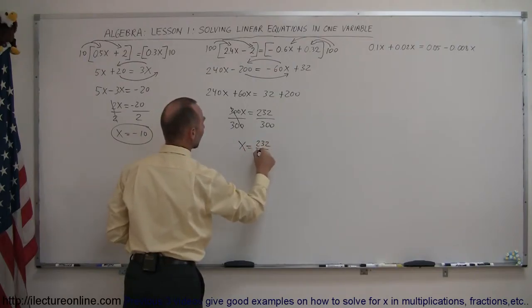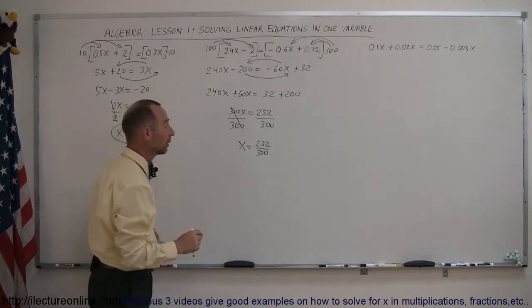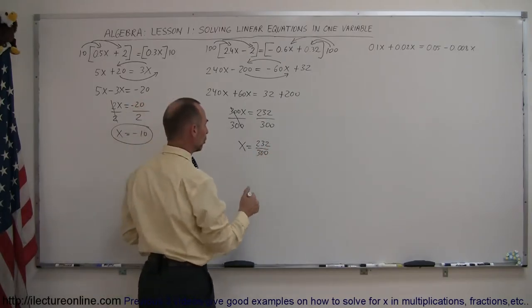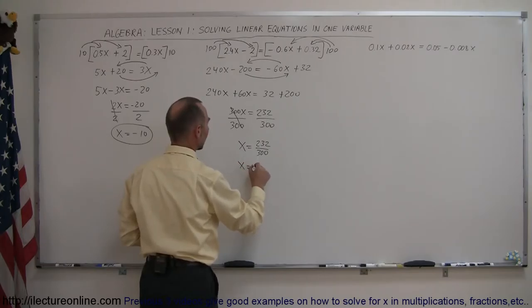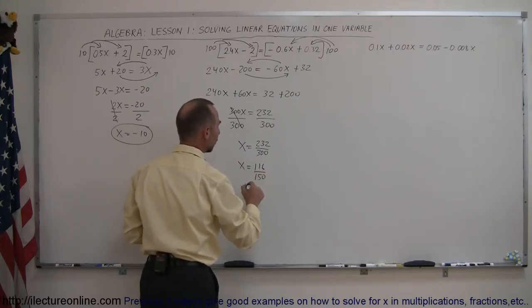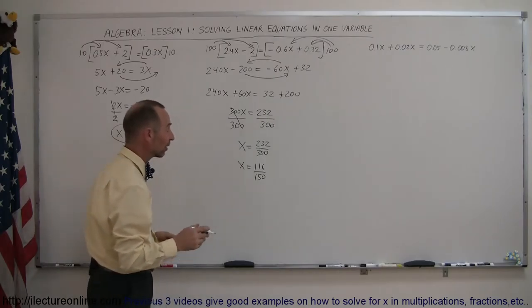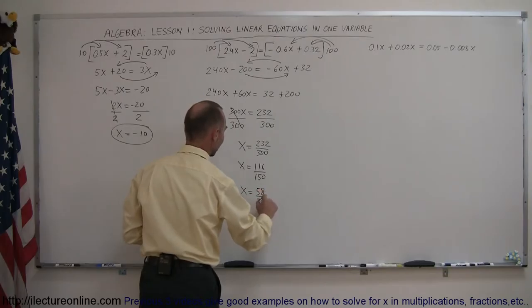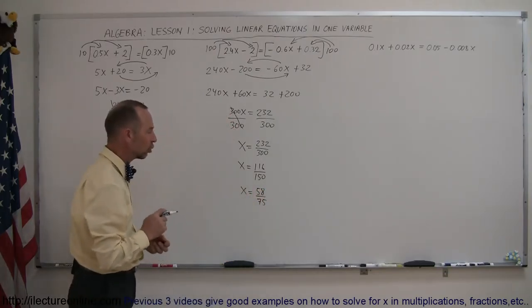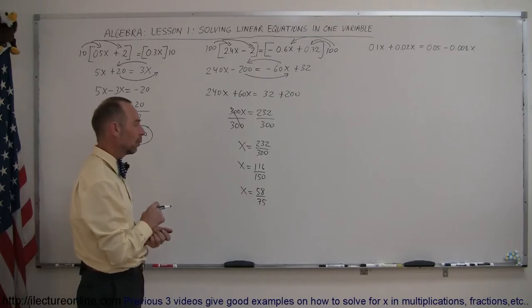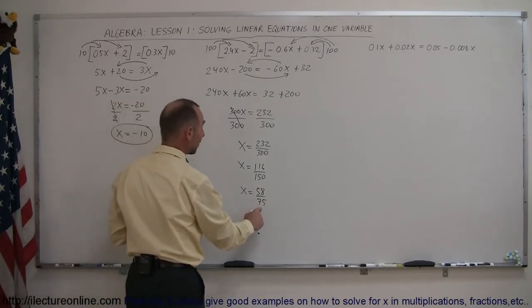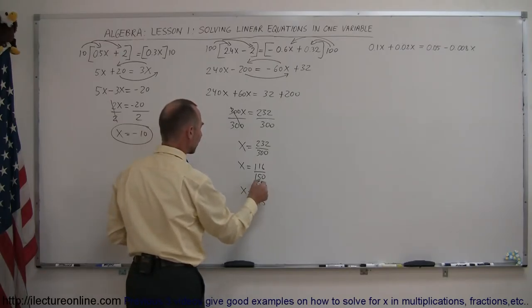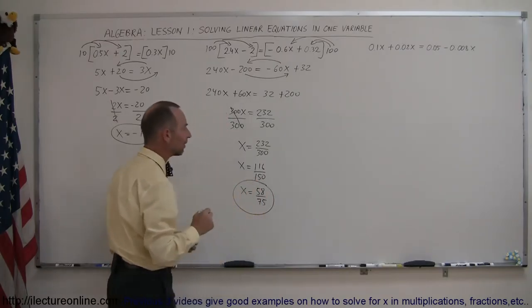this becomes 300x equals 232, and so x is equal to, let me write it out because it's better that way, divide now both sides by the number in front of the x, so divide by 300, divide by 300, this cancels out, so x is equal to 232 divided by 300. Now, we can probably simplify that, because both the top and the bottom, the numerator and denominator are even, that means they can be divided by 2, so we can write x is equal to 116 over 150. Notice they're both still even,